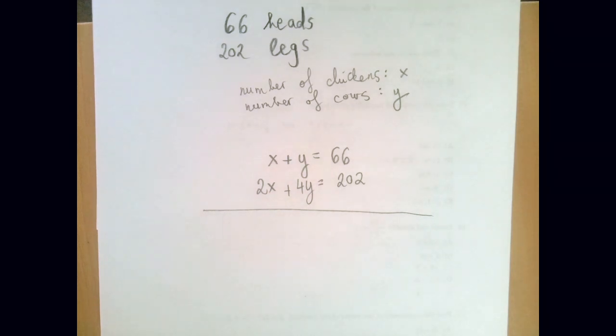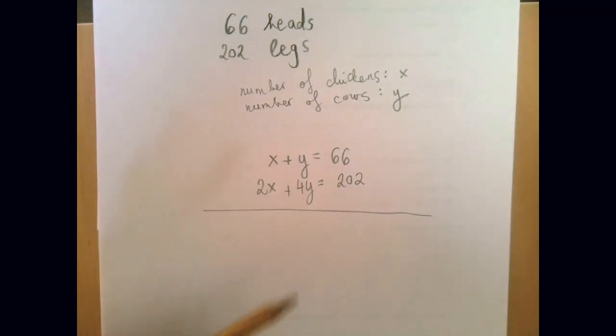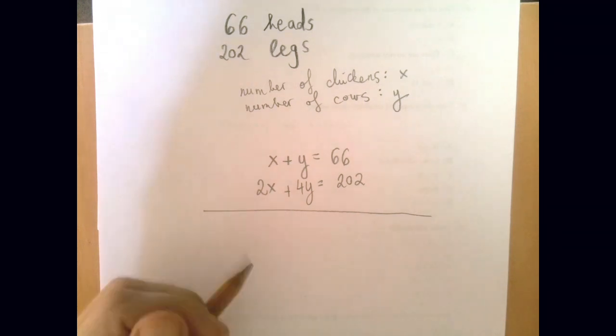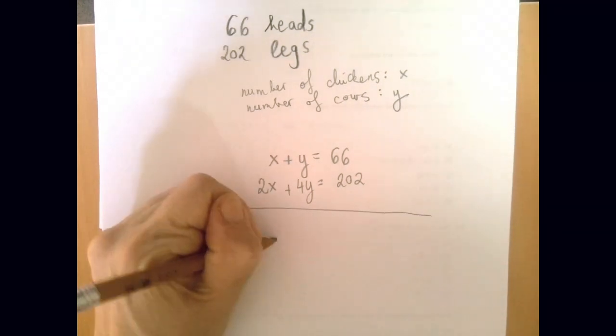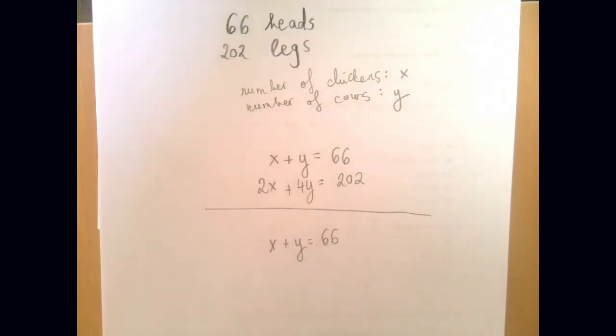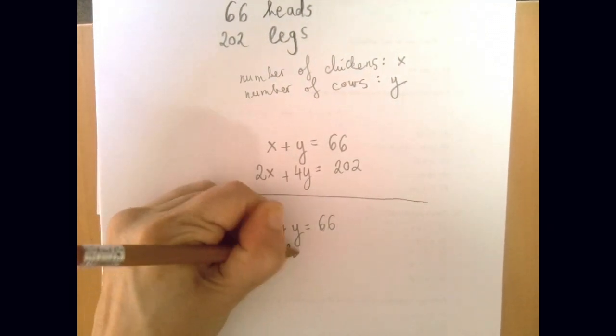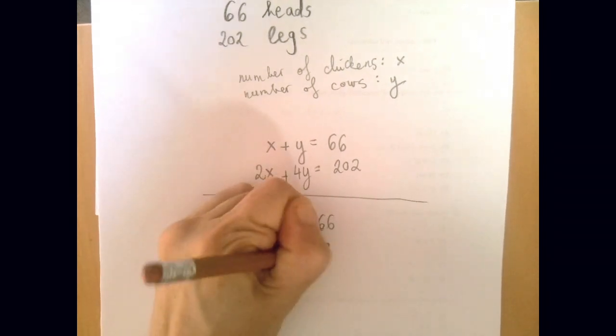The first equation is very simple, and actually the second one can be made simpler. If you notice that every number, every coefficient is divisible by 2, so before we solve the system, let's just simplify the second equation by dividing it by 2. So then we get x plus 2y equals 101.